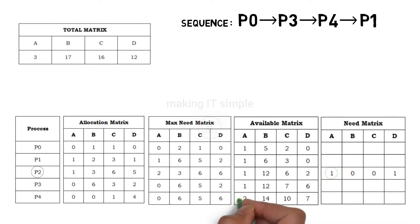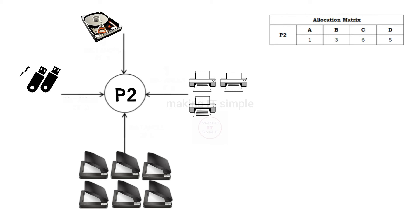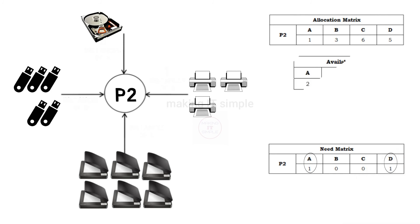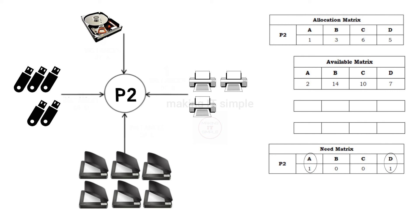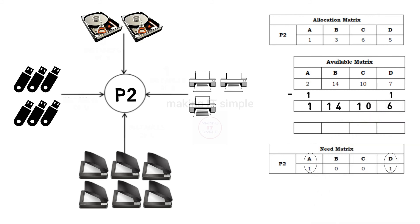P2 requires 1 instance of resource A and we have 2 free, 0 instances of resource B, 0 instances of resource C, and 1 instance of resource D and we have 7 of them. So we can provide the required number of resources to P2. According to the allocation matrix, process P2 already has 1 instance of resource A, 3 instances of resource B, 6 instances of resource C, and 5 instances of resource D. It requires 1 instance of resource A and 1 instance of resource D according to the need matrix. So we will provide 1 instance of resource A and 1 instance of resource D from available resources, and we will have 1 instance of resource A, 14 instances of resource B, 10 instances of resource C, and 6 instances of resource D left.